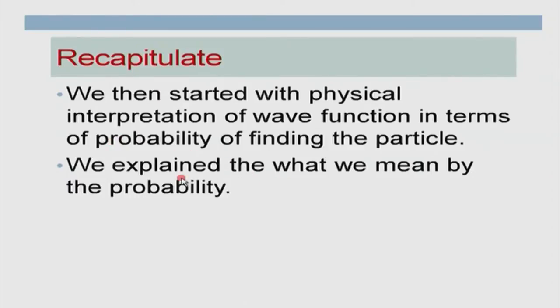We started discussing the physical interpretation of the wave function in terms of probability of finding the particle. When calculating the probability of observing a particle, we do not mean the particle keeps changing position if we keep measuring one after another. Once we identify and find the particle at some location, immediately after that the particle will still be there — we cannot find it has gone somewhere else. When talking of probability, we are talking about measurements over a large number of particles. We assume a very large number of particles all described by exactly the same wave function. In quantum mechanics, you get well-defined probabilities but not well-defined positions.